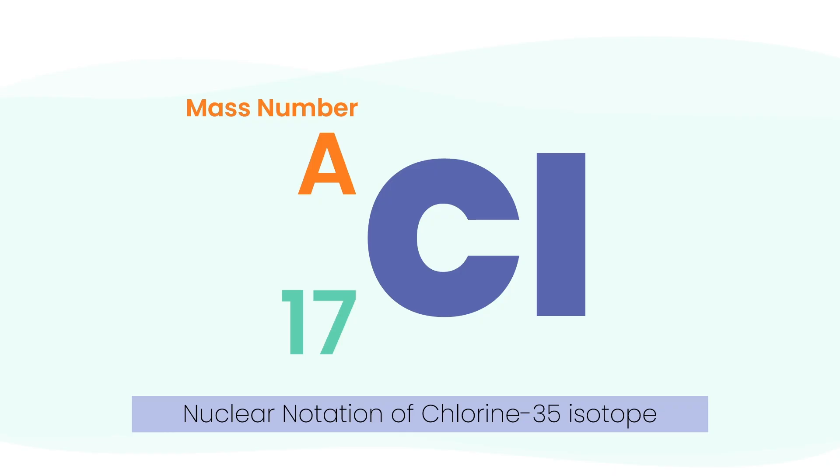And for the isotope chlorine-35, the mass number is 35, so we replace A with 35. The mass number goes at the top, 35, and the atomic number goes at the bottom, 17. This tells us everything we need: it's a chlorine atom with 17 protons and a total mass number of 35, which means it has 18 neutrons.